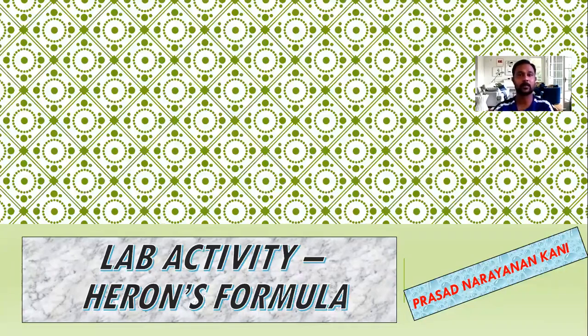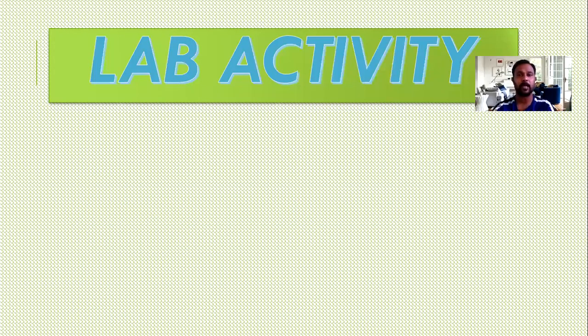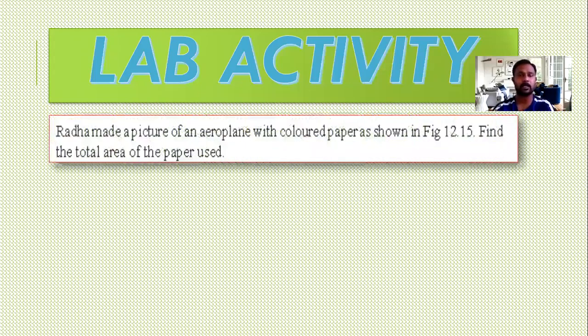Let us see the lab activity in Heron's formula chapter. Actually there is a question in exercise 12.2. Radha made a picture of an aeroplane with colored paper. Find the total area of the paper used. This was the figure given.